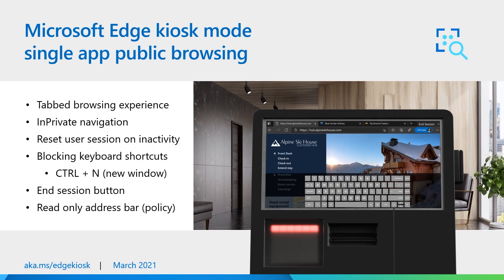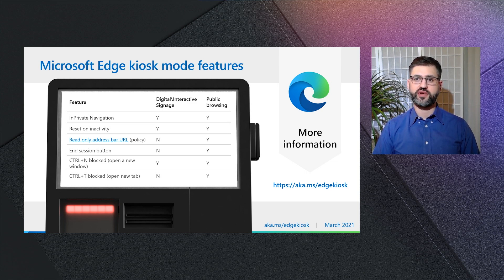The second experience that Microsoft Edge enables is public browsing. This experience includes all of the features of digital interactive signage and more. It is known as a keyboard and mouse experience, used in a public library or hotel concierge. The main features important to me as a user at the hotel concierge are checking information about the hotel, places and activities near me, and the ability to print documents like schedules or tickets. For a complete list of features, I recommend checking our documentation at aka.ms/edgekiosk.